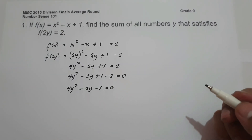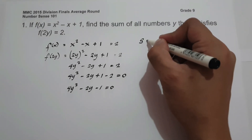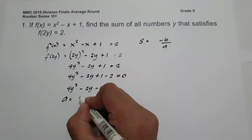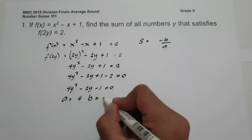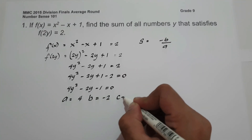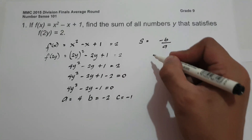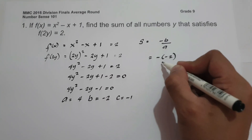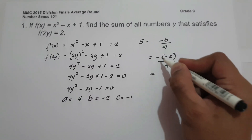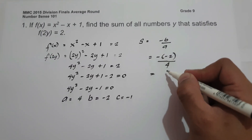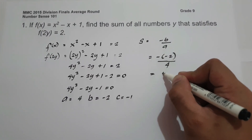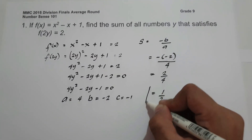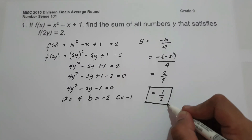Since we are looking for the sum, the formula for sum of roots is negative b over a. The value of a is 4, the value of b is negative 2, and the value of c is negative 1. So we have negative times negative 2 over 4. Negative times negative is positive, giving us 2 over 4, which is 1 half. So the sum of all numbers y is 1/2, and this will be our answer.